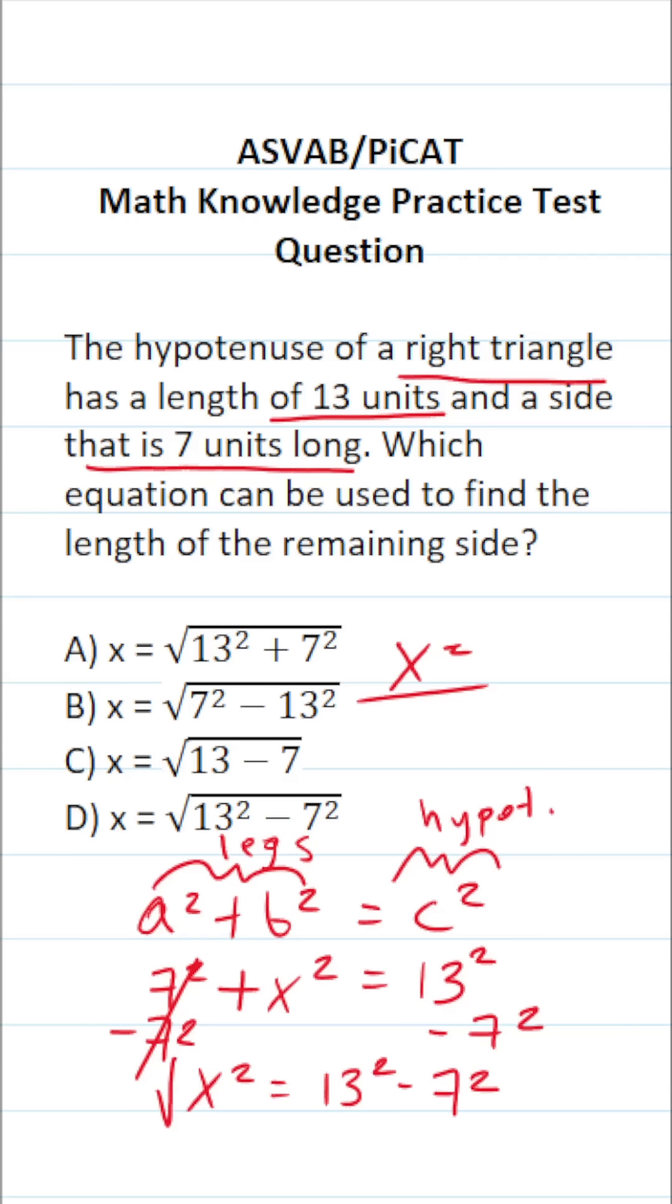And finally, to get x by itself, we're going to take the square root of both sides. In doing so, this crosses out over here, leaving us with x equals the square root of 13 squared minus 7 squared.